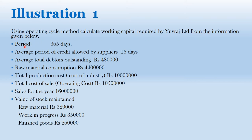The given data: period 365 days; average period of credit allowed by supplier, 16 days — this is readily given. Average total debtors outstanding: Rs. 4,80,000. Raw material consumption: Rs. 44,00,000. Total production cost or cost of production: Rs. 1 crore. Total cost of sale or operating cost: Rs. 1,55,00,000. Sales for the year: Rs. 1,60,00,000. Value of stocks maintained — raw material: Rs. 3,20,000; work in progress: Rs. 3,50,000; and finished goods: Rs. 2,60,000.